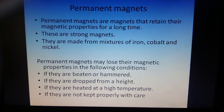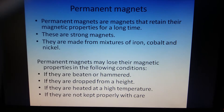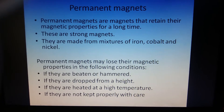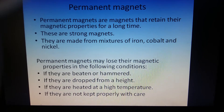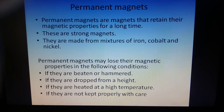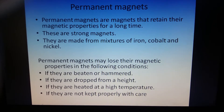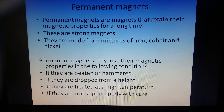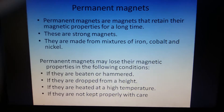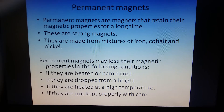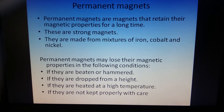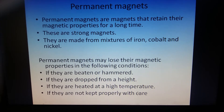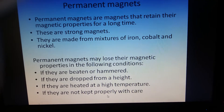Then we saw permanent magnets — those magnets which retain their magnetic property for a long time. They are strong magnets made from mixtures of iron, cobalt, and nickel. Permanent magnets may lose their magnetic property if they are beaten, dropped from a height, or heated at high temperature.